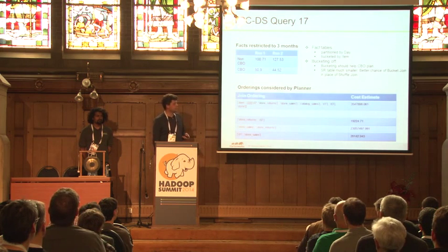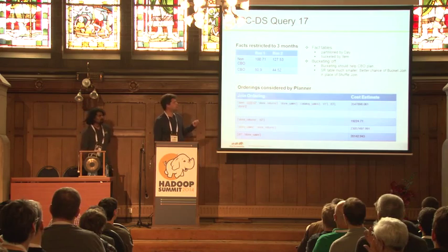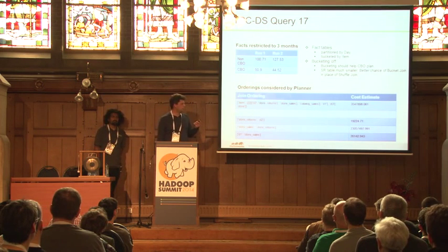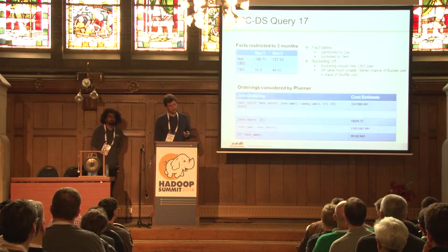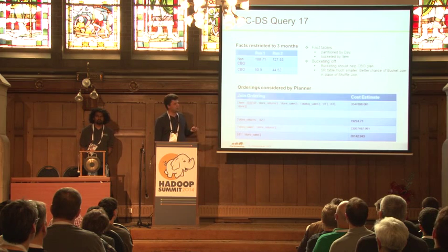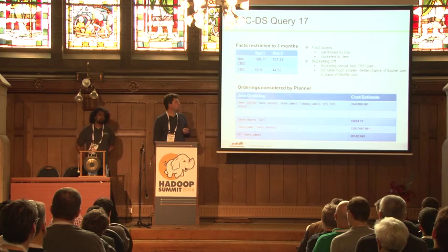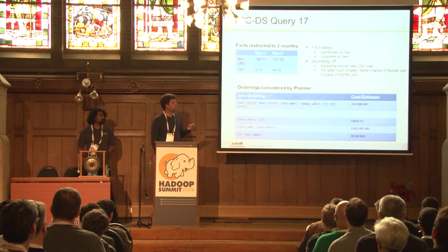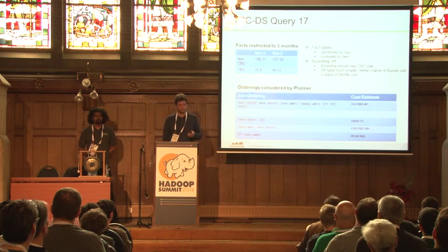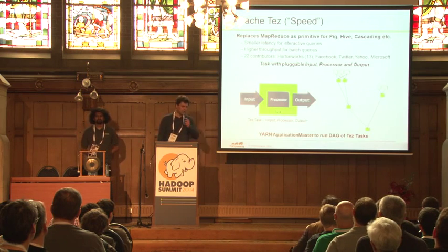We ran this against a 10K data set with facts restricted to three months. Even in its current form — with limitations, still working on details of the cost formula, and not yet looking at all join permutations — you can see dramatic query improvements: 127 seconds down to 44 seconds.